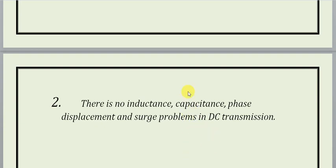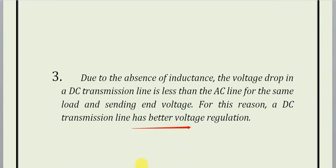DC transmission के case में कोई inductance और capacitance exist नहीं करती है. यही वजह है कि हम HVDC को prefer करते हैं — इसमें inductance, capacitance नहीं होती, 120 degree phase displacement नहीं होता. इसी वजह से हम HVDC पे move करते हैं. Surge problems — जब भी electrical switching होती है, तब surge phenomena हमेशा switching losses की वजह से produce होता है. DC transmission use करने पर inductance, capacitance, phase displacement और surge problems face नहीं करने पड़ेंगे.